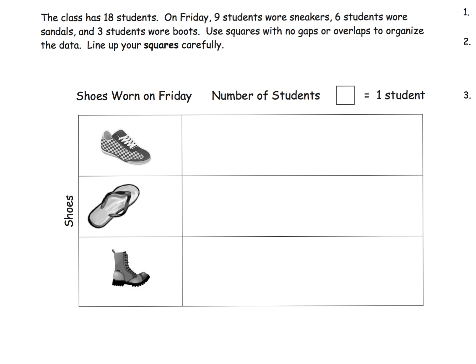Here, a little less fun, but the students are given the data and they're going to draw in their little squares. It says the class has 18 students, so we need 18 squares. On Friday, nine students wore sneakers, six wore sandals, and three wore boots. Use squares with no gaps or overlaps to organize your data. Let's get working on that.